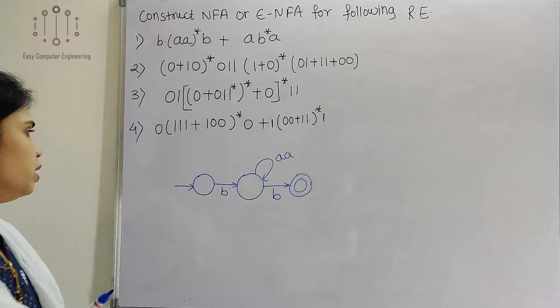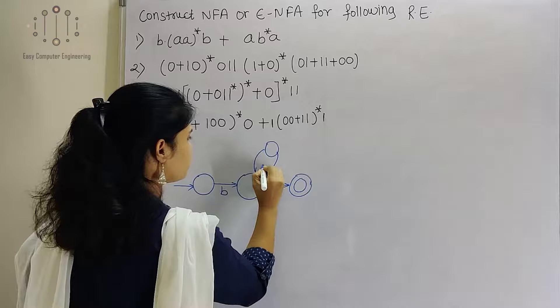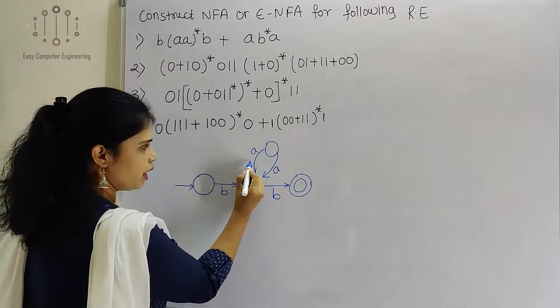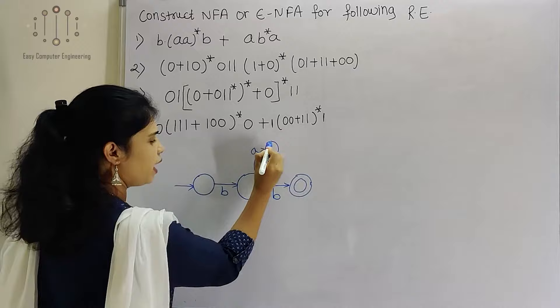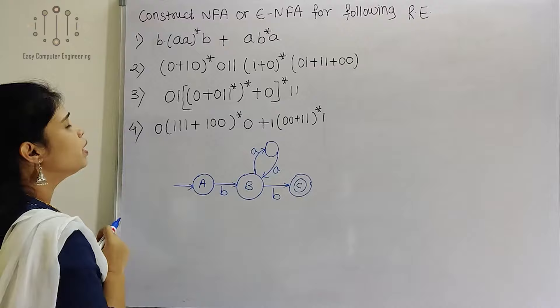But we don't want A directly like over here. So to show A·A*, we can take one more state and over there an A-loop will be there. That means B, A, A, A*, then B. In this way, this will be our first part.